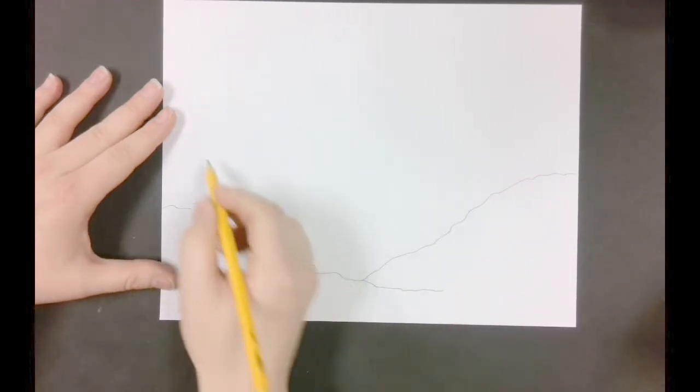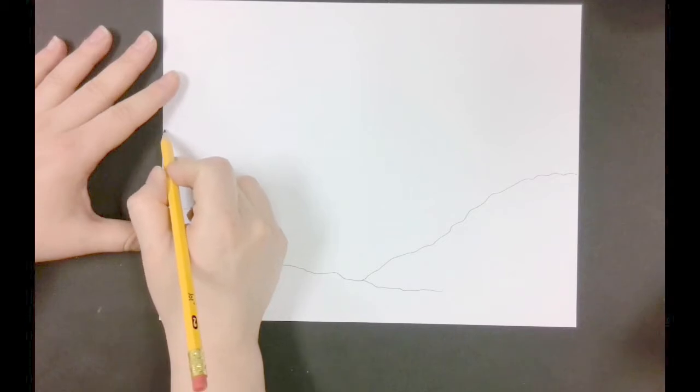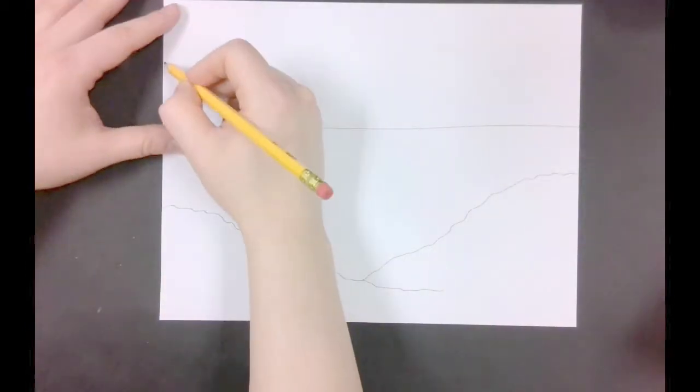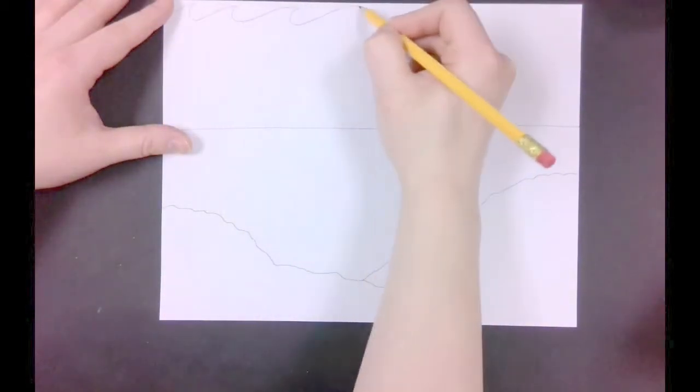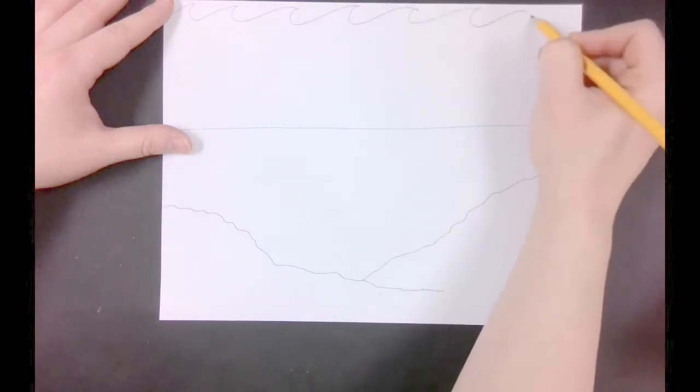Now draw a line straight across the middle of your page to be the edge of the sand. Use bumpy lines on the top to show the waves of the water.